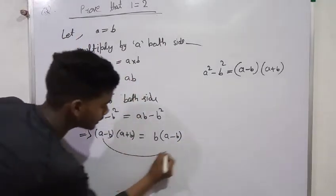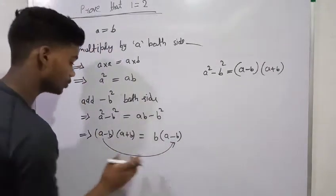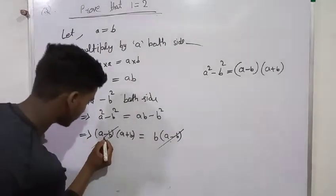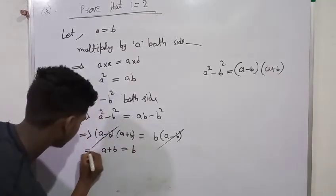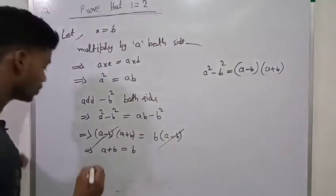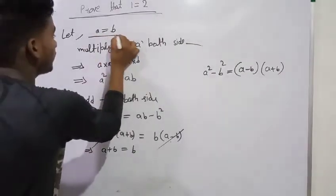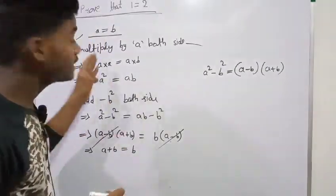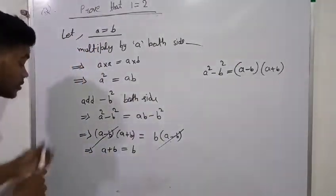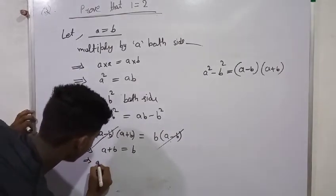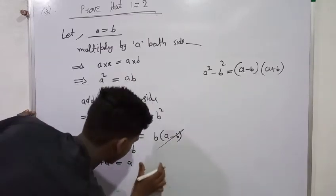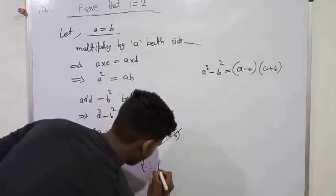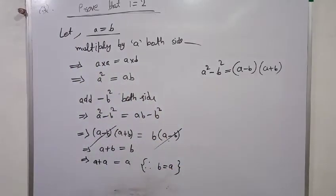Now we divide both sides by A minus B, which cancels out on both sides. So we are left with A plus B equals B. Since A is equal to B, we substitute to get B plus B equals B, which gives us 2B equals B, and therefore 2 is equal to 1, i.e., one is equal to two.